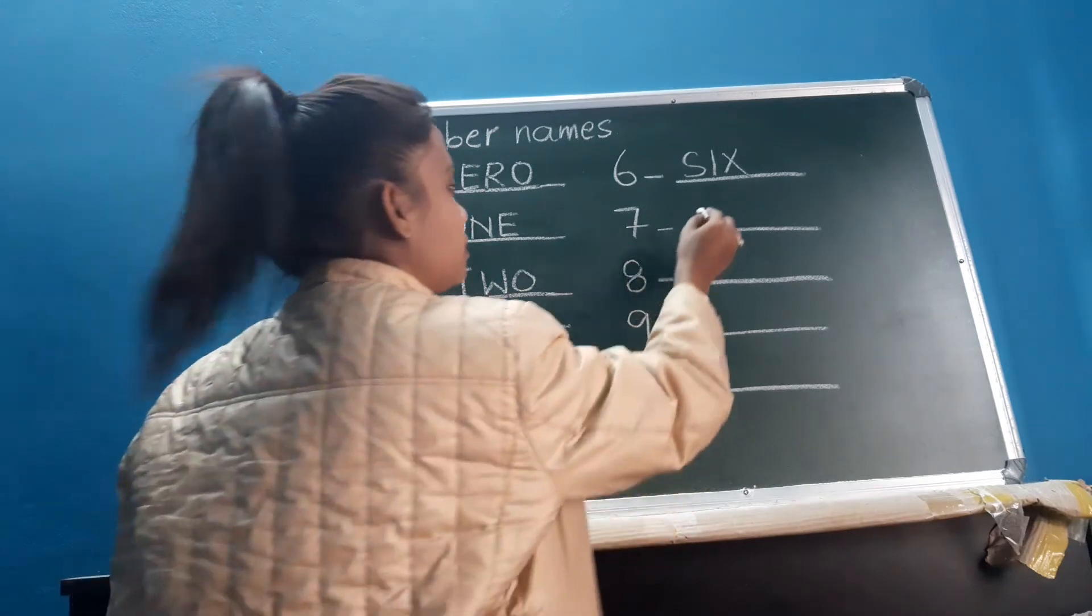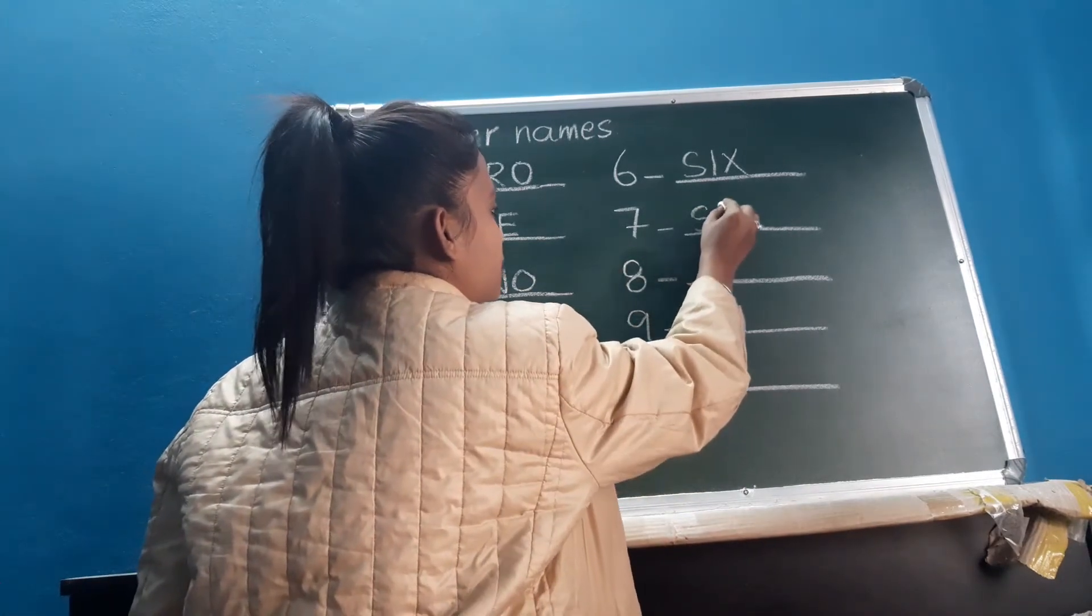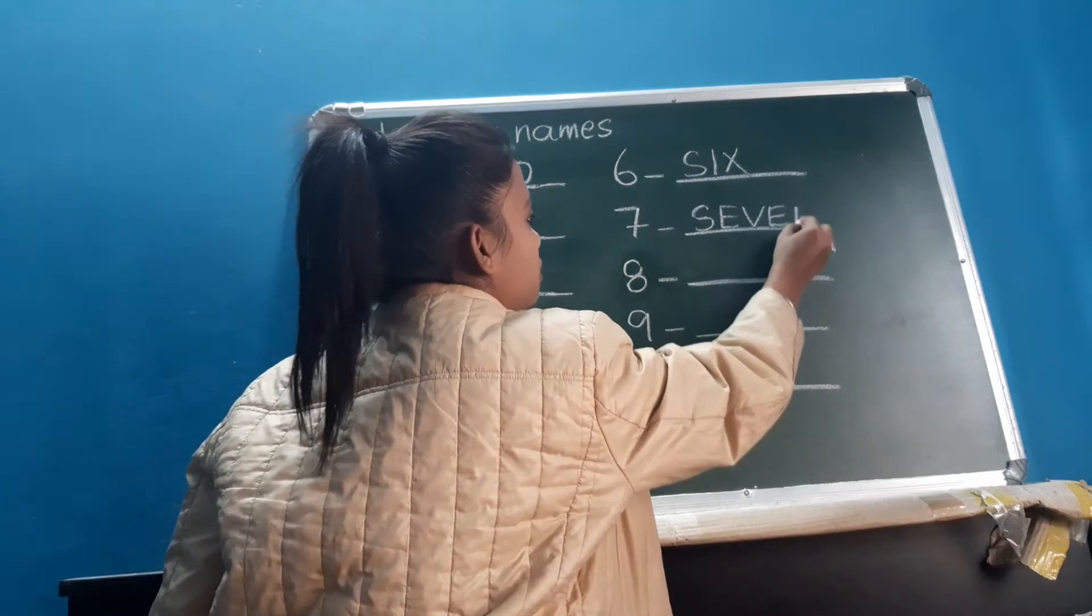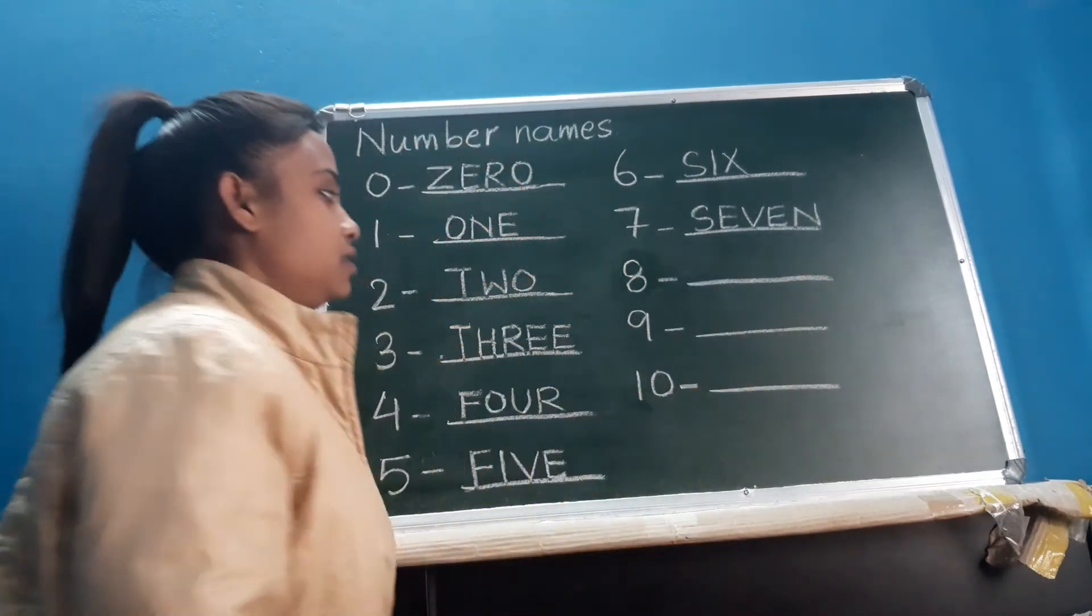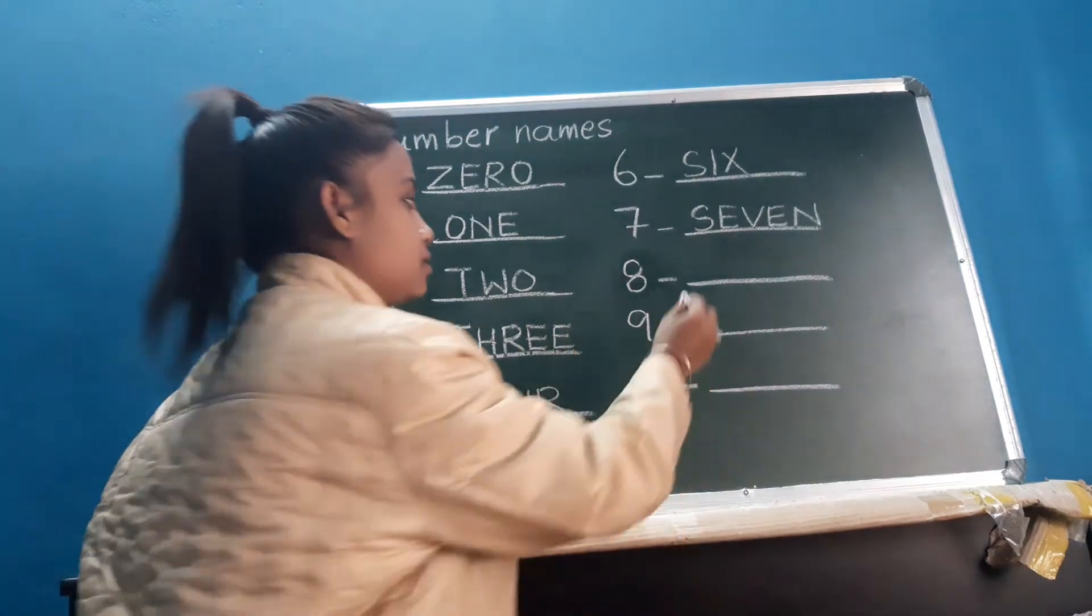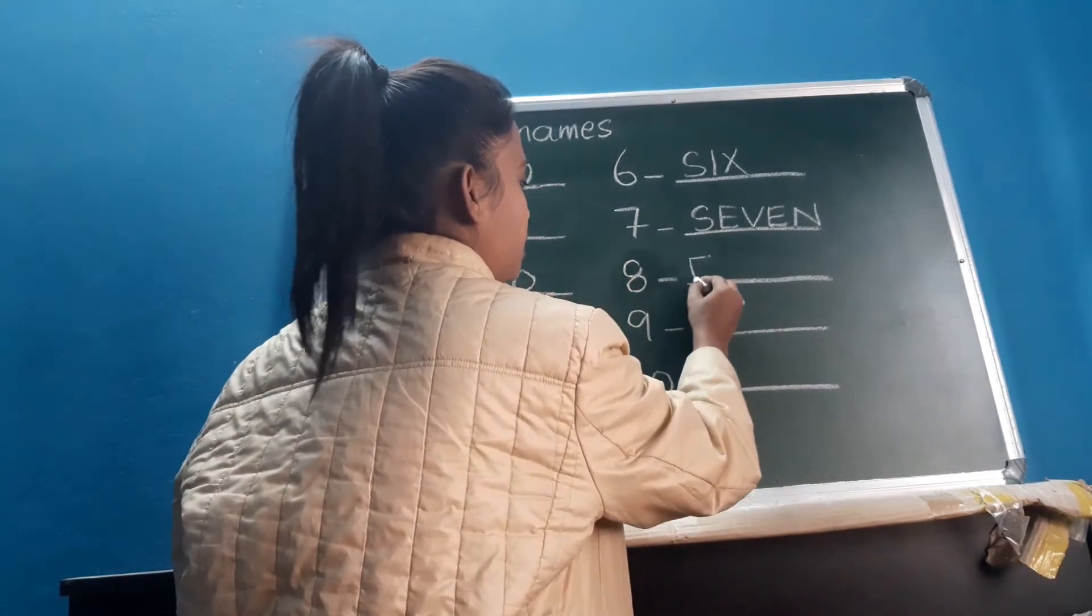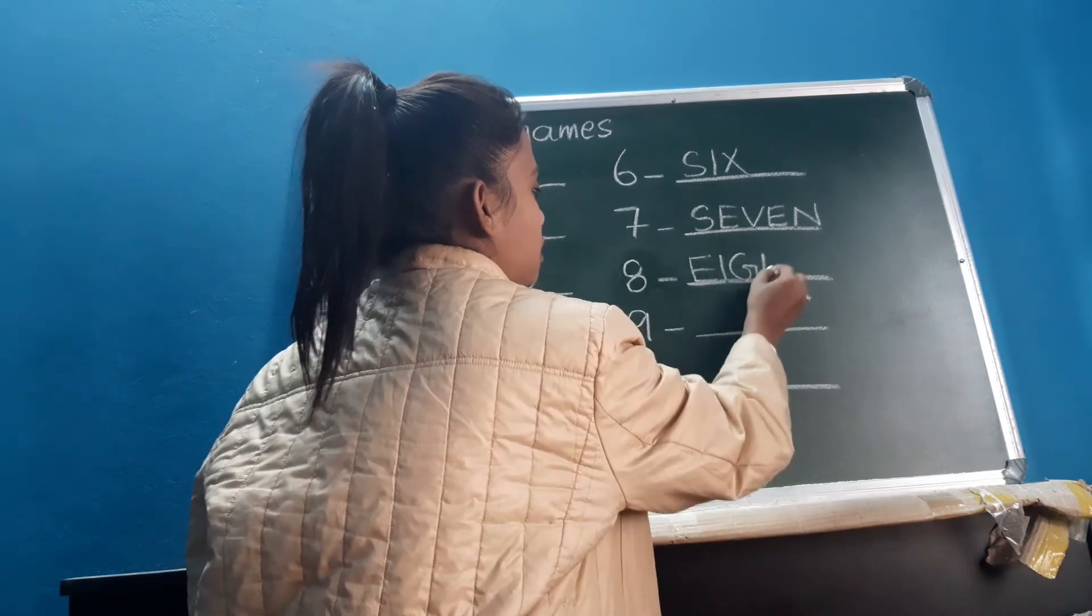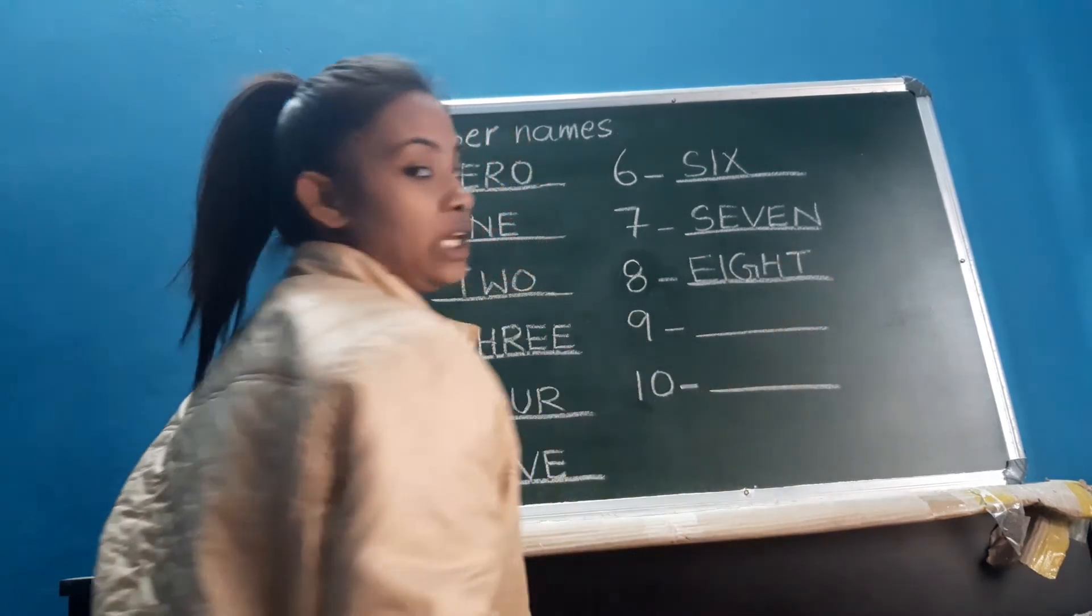Next is 7: S, E, V, E, N. Seven. Next is 8: E, I, G, H, T. Eight.